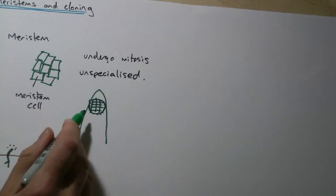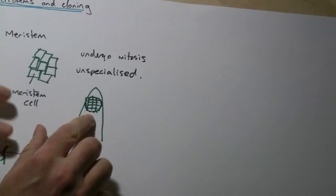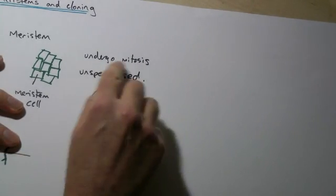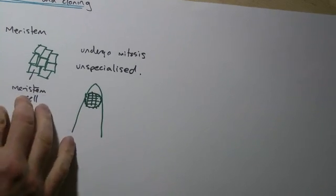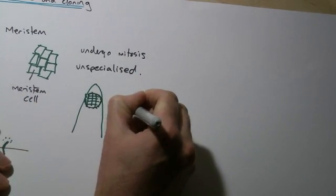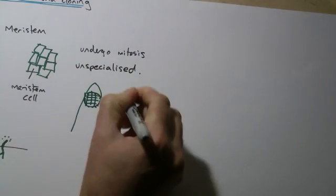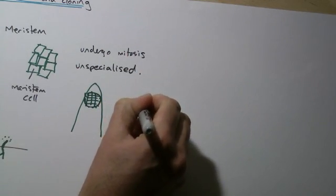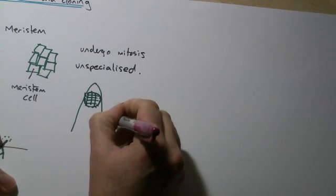Now the thing that causes them to either specialize or to undergo mitosis is a chemical signal and the chemical signal in this case is auxins. And auxins are kind of a plant hormone or a plant growth hormone.